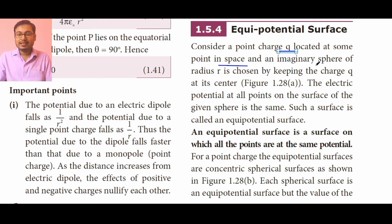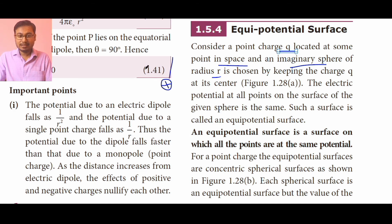Amazingly, a sphere of radius r — suppose we have a point charge q; most of the time whenever we consider any charge we take it positive — and just imagine a three-dimensional sphere around it whose radius is r. This is not a circle; this is a sphere instead.